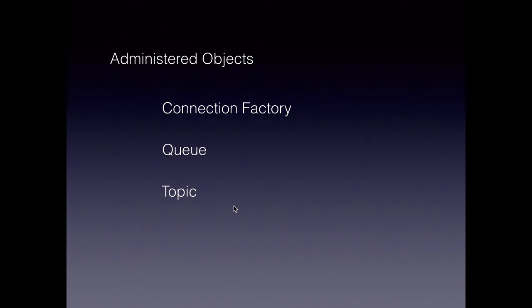We create these objects only once. The connection factory is for the client to send messages. When we write a JMS client or a messaging client, we first get a connection factory, then create a session or connection, and start sending messages. Similarly, we can use the connection factory to read messages off the queue or topic.